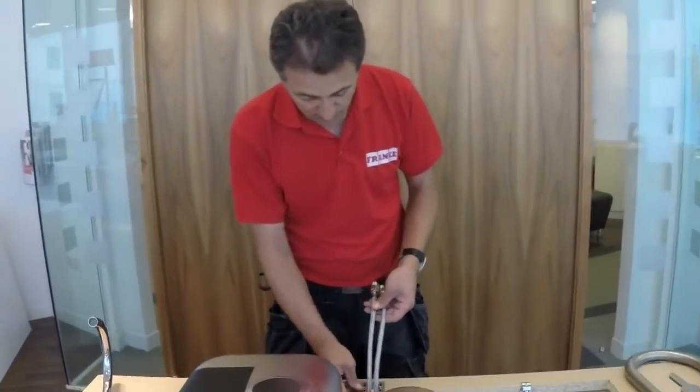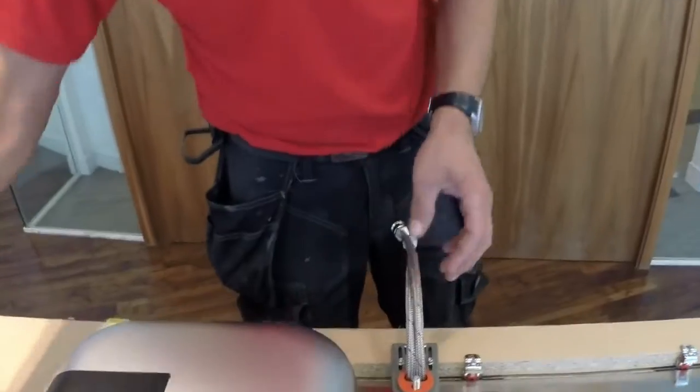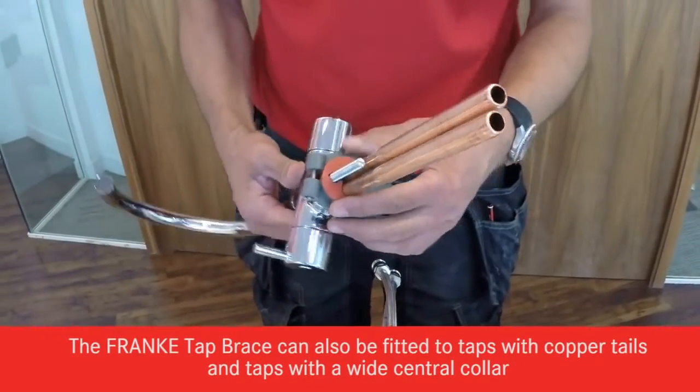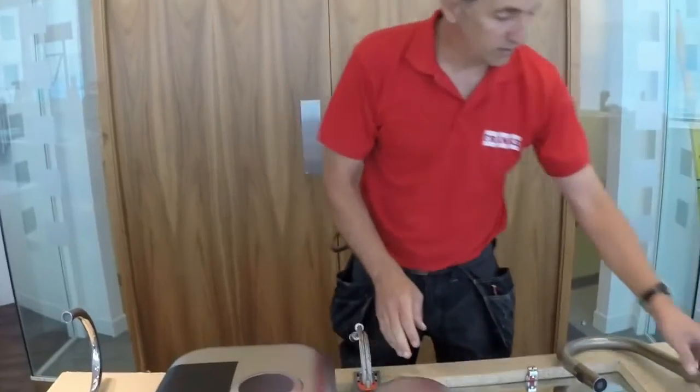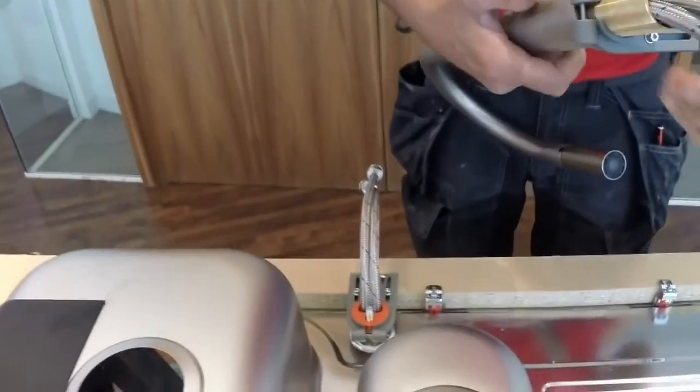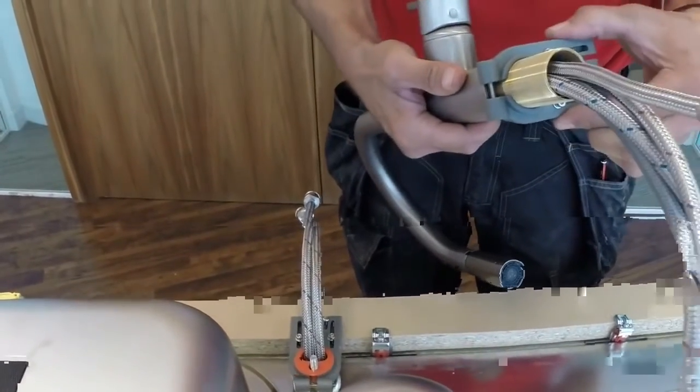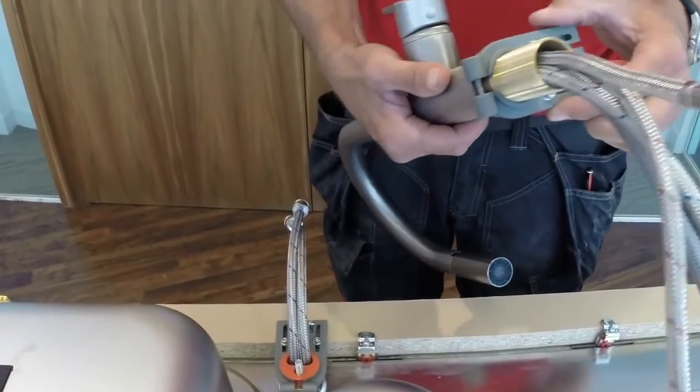That's the tap brace fitted to a tap with flexible tails. The same brace is also suitable for a tap with copper tails. The brace also works with a central threaded collar. Just take out the red insert and the brace fits straight over the collar. Same principle.